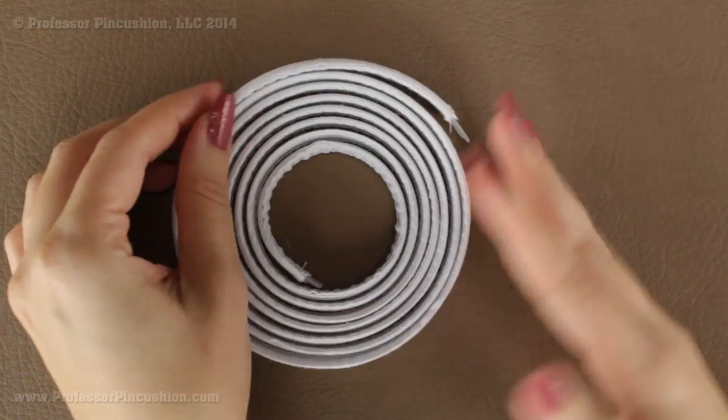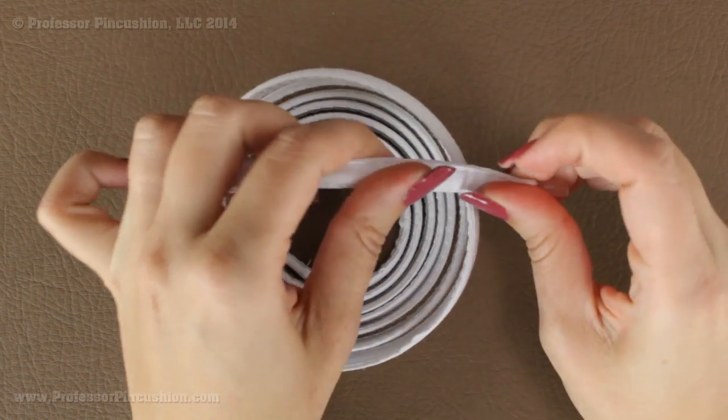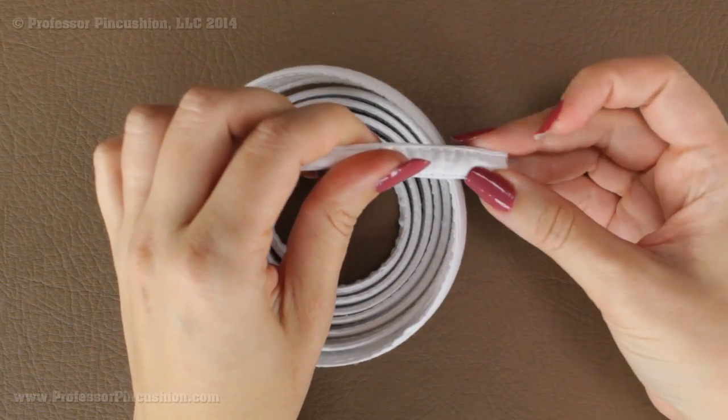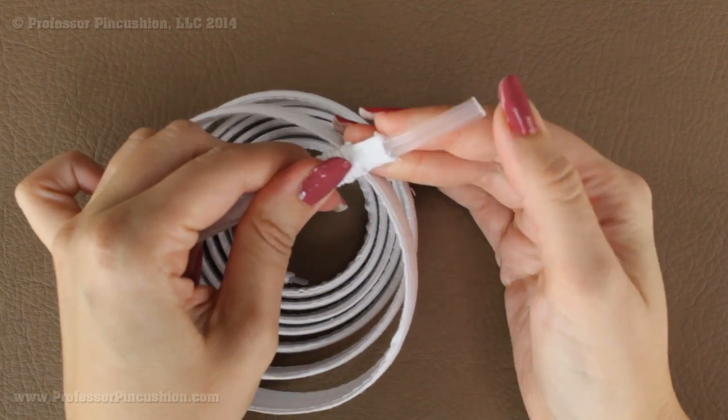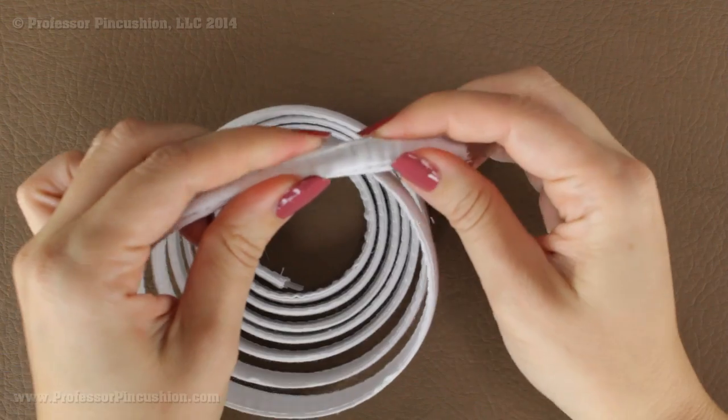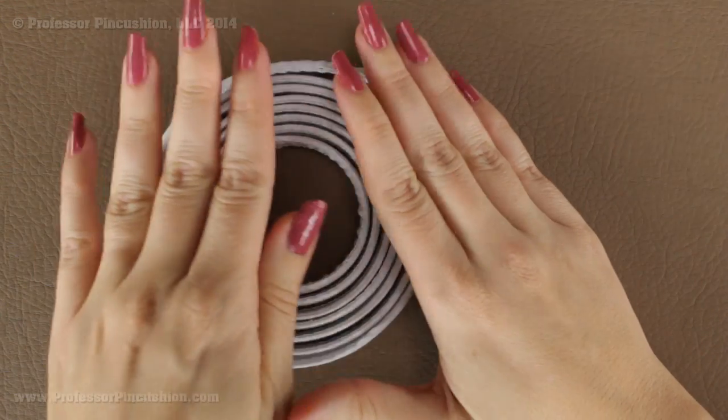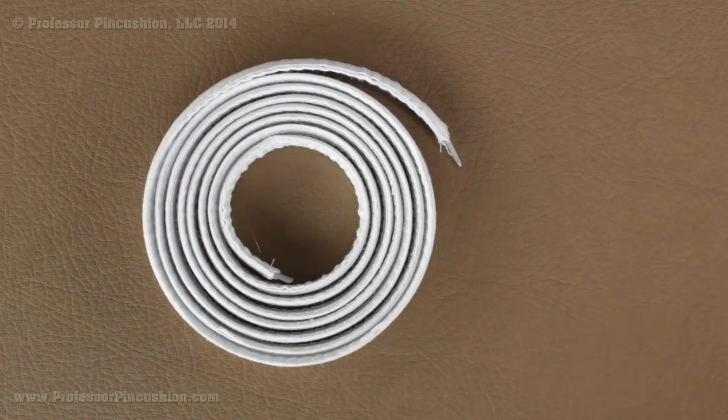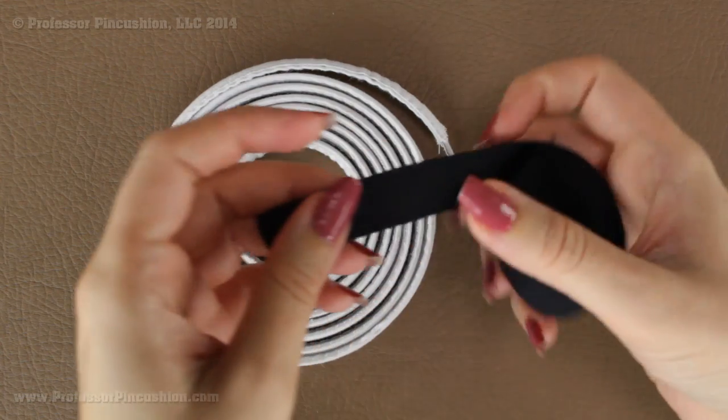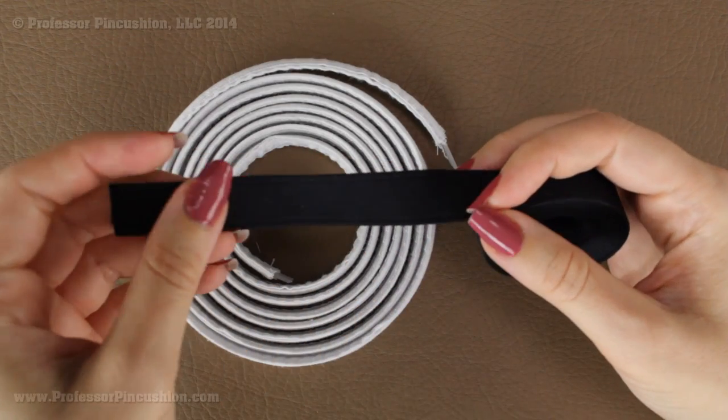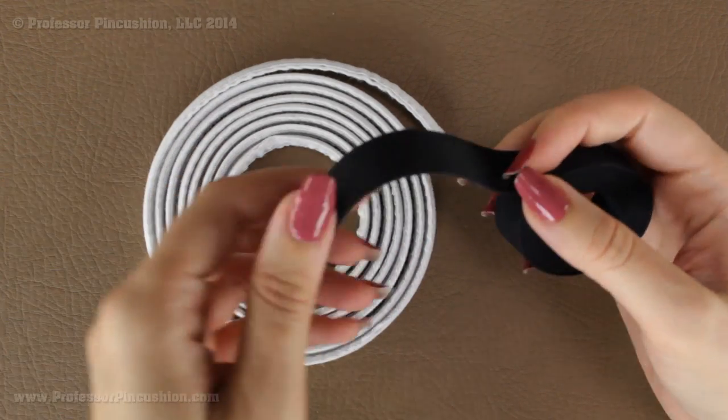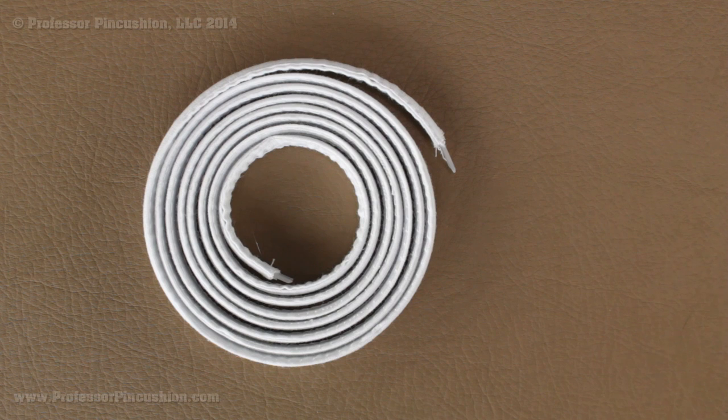Now the problem with the plastic boning is it doesn't have as much durability and as much structure and support as the steel bonings. It will give you light support but if you want something that's going to have a lot of support then you're going to want to go with the steel and it will also last longer as well. The nice thing about this is it is easy to work with. You can cut it with scissors. You can cut it to whatever length you want and it comes with its own casing. With the other two bonings you can either buy premade casing, make your own casing, use bias tape, use ribbon, or you can use a channel that you can actually sew onto your garment using the seam allowance.